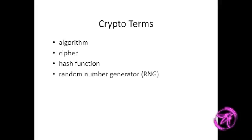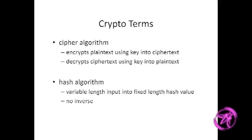An algorithm in the cryptographic sense is still just computer science and mathematics. A cipher is a very particular kind of algorithm, and there are hash functions — another specific cryptographic algorithm — and random number generators, which technically aren't algorithms at all; if there's an algorithm involved you're actually making a mistake. Ciphers encrypt plaintext into ciphertext and decrypt ciphertext into plaintext. If you hear the term 'de-encrypt,' that's a red flag — decrypt is the correct term.